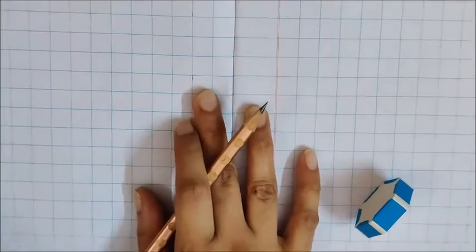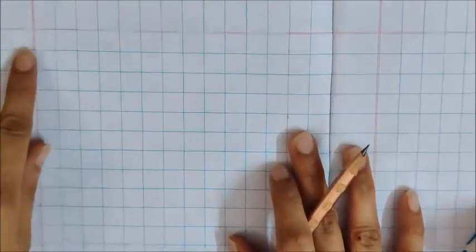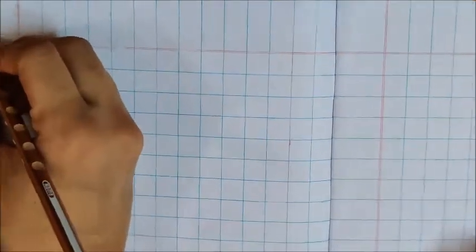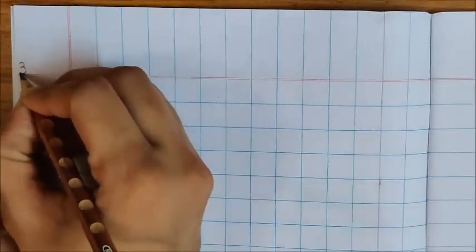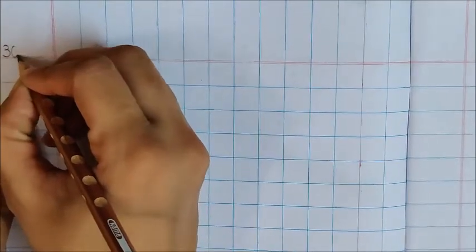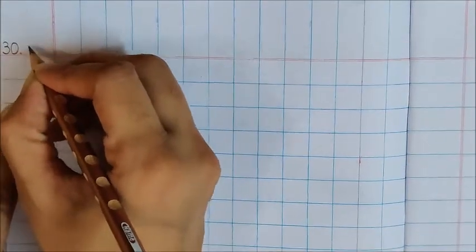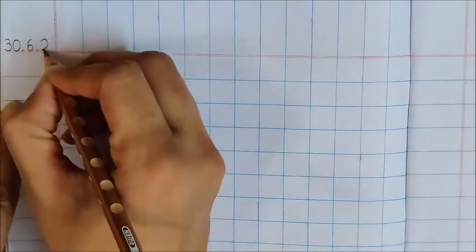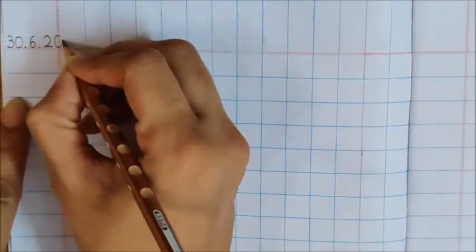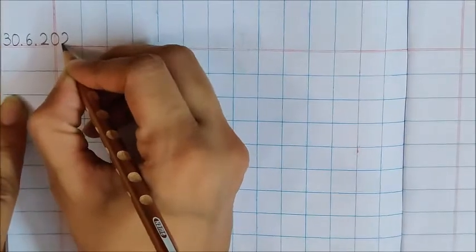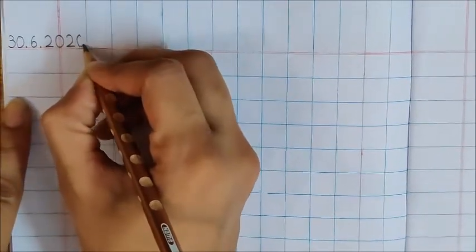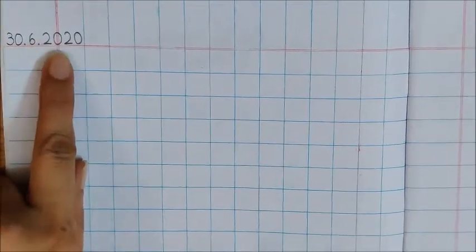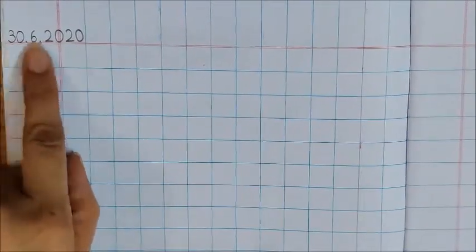Today is June 30. So here I am going to write the date on the red line. 30 dot 6 dot 20 20. This is today's date.